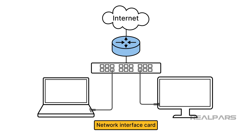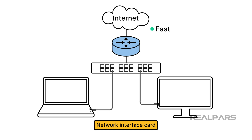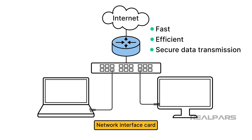Ethernet networks typically consist of routers, switches, and network interface cards. The field of information technology arose from the need to provide fast, efficient, and secure data transmission via Ethernet.